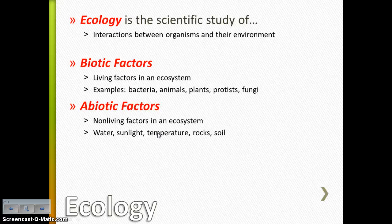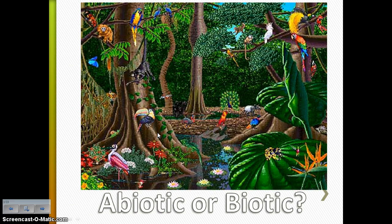So biotic factors — normally we think of plants and animals, but don't forget about bacteria, protists, and fungi. And then for the abiotic factors, those are going to be things like water, sunlight, temperature, rocks, and soil. So looking at this lovely picture of a tropical rainforest, on your notes organizer, see if you can identify three examples of biotic factors and three examples of abiotic factors.